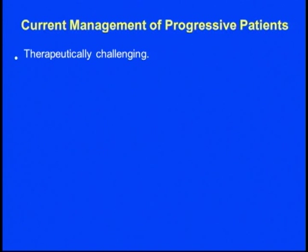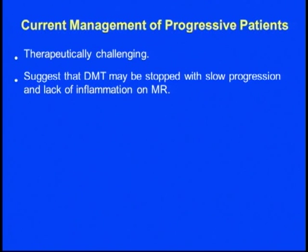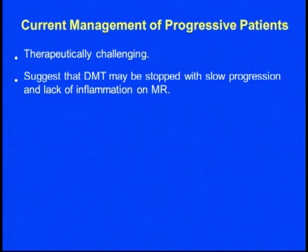The current management scheme is not ideal — it's therapeutically challenging. Starting disease-modifying treatment early is the key. We have many disease-modifying treatments, and by starting early we may be able to delay the progression of disability. However, progression eventually occurs, and once there is a lack of inflammation on MRI, disease-modifying treatment may lose its efficacy.